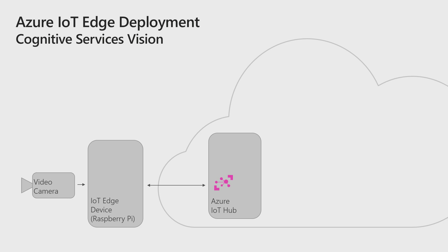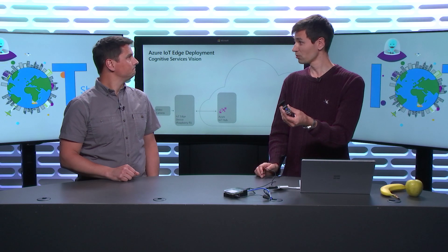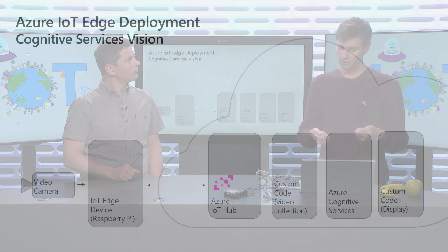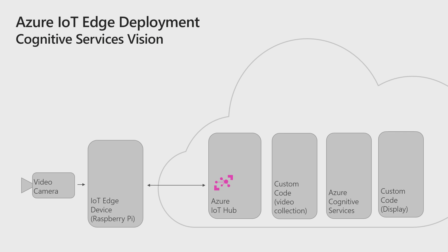My IoT Edge device is a Raspberry Pi, plugged into a regular USB camera. It's connected to my Azure IoT Hub service in the cloud. I've developed two custom modules: one to read the frames of this USB camera, and another to manage and control the display on my Raspberry Pi — to display the output of my AI model. And the last one is the custom vision model itself.